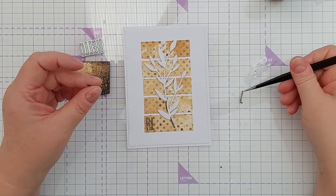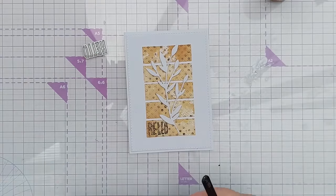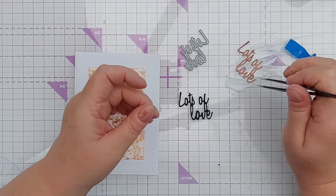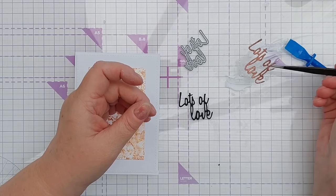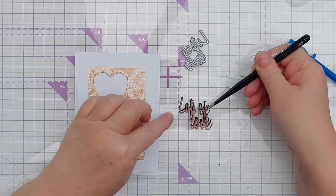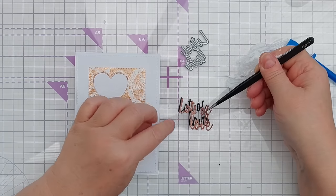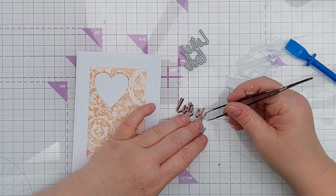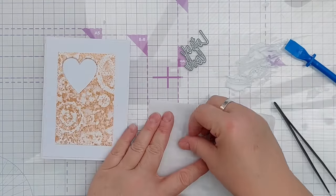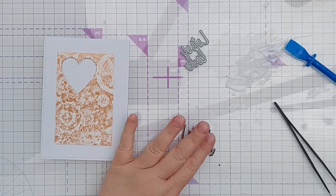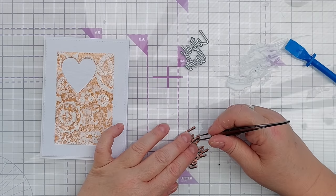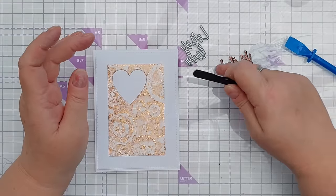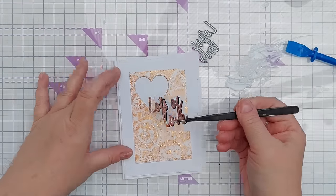For this last one, I've used a 'lots of love' die to die cut out words from copper glitter cardstock again, and I've also cut it from black cardstock because I want to give this a little bit of a drop shadow. I'll press that down with a bit of non-stick paper. The glue will dry clear, so there's a few bits showing but it'll be fine. I'll get some glue on the back of that and add it over the aperture that I cut in this panel.